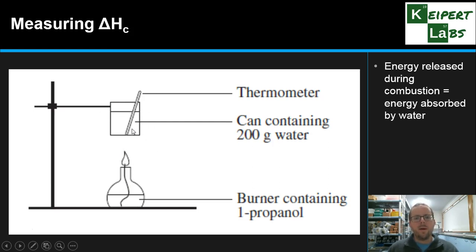We have a can above that containing a known mass of water. So in this diagram, the illustration contains 200 grams. It doesn't really matter exactly how much, as long as you know what that value is. And of course we have a thermometer, because what we're looking at here is saying that the energy released during combustion is all being absorbed by the water. So the water is absorbing that energy, and we can use the thermometer to quantify how much that energy has gone into that water by looking at how much it increases in temperature.